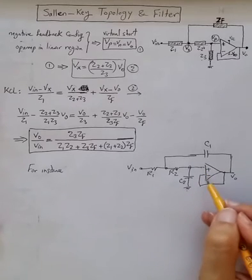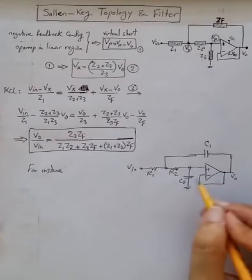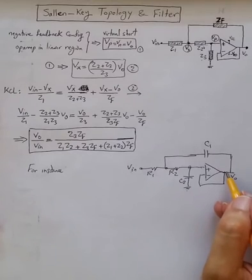And then, assuming op-amp in linear mode of operation, the voltage here would be zero. So for high frequency, this topology will enforce zero voltage at the output. So it will kill high frequency components.